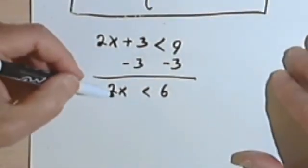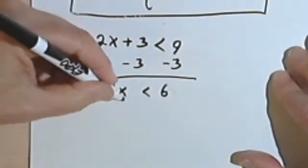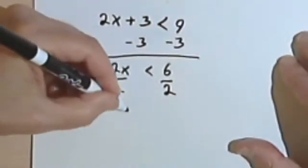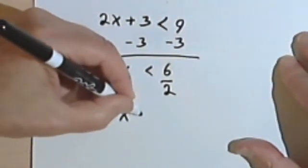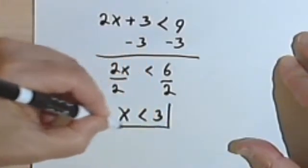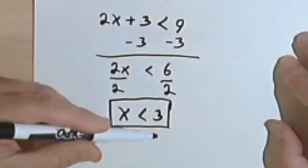Once again, thinking if this was a regular equation, I would divide both sides by 2. On the left side I've got an x, I've got my less than sign, and I've got a 3. So the solution to that inequality is just going to be x is less than 3.